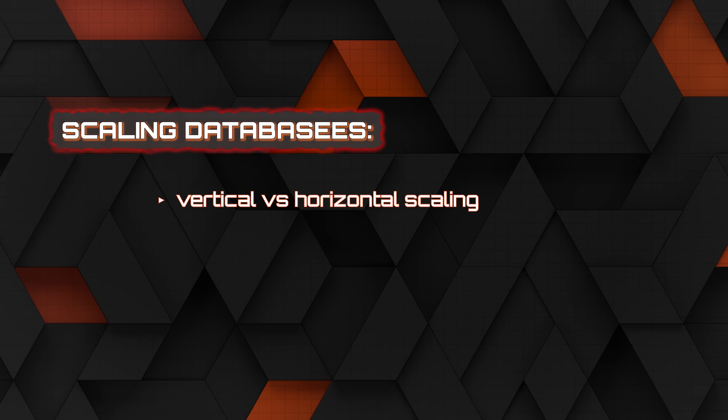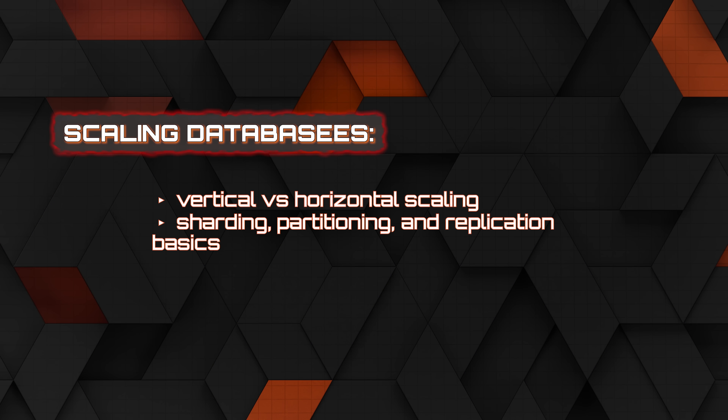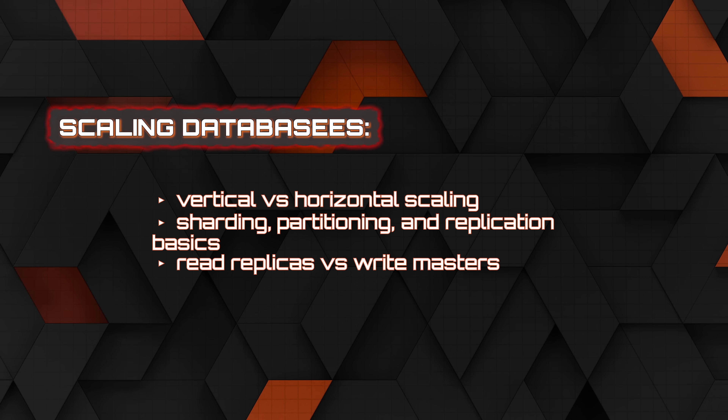The advanced level is really about scaling and modern data architectures — more architectural topics at a senior level. First is scaling databases: vertical scaling versus horizontal scaling — when do you add more compute versus more resources — and getting into things like sharding, partitioning, and replicating your databases. This includes read replicas versus write masters and more complex architecture with multiple machines in a distributed system.